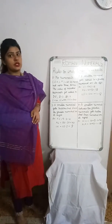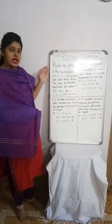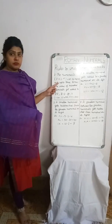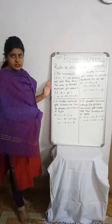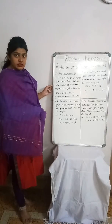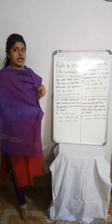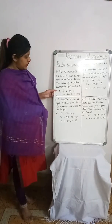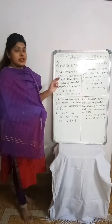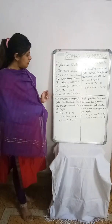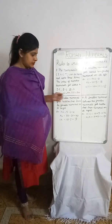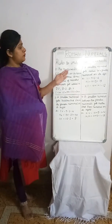To write Roman numerals we should know the rules. Rule 1: The numerals I, X, and C can be repeated up to three times; they cannot be repeated more than three times. The value of repeated numerals gets added. For example, I represents 1; II is 1+1 = 2; III is 1+1+1 = 3. Similarly, C is 100; CC is 200; CCC is 300.